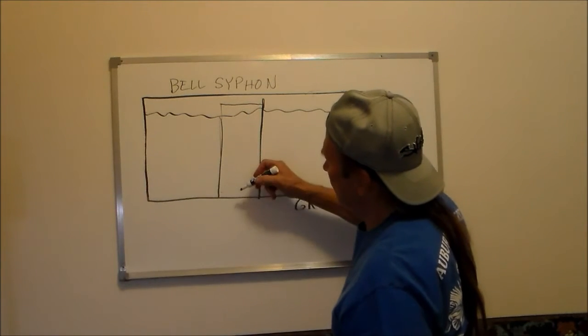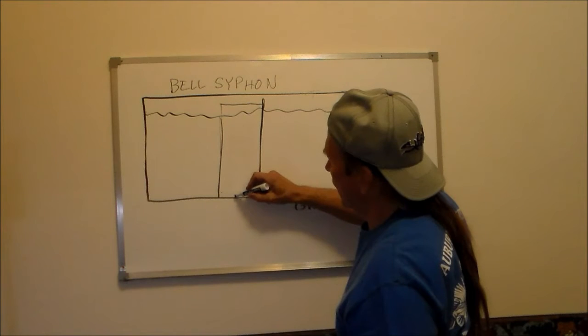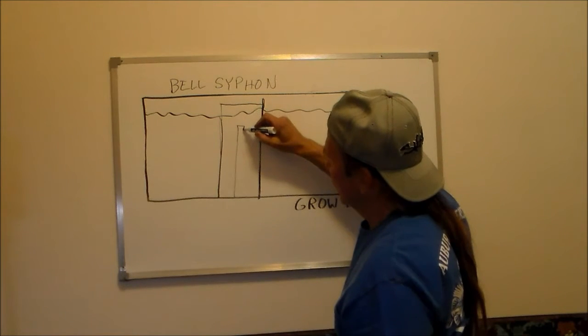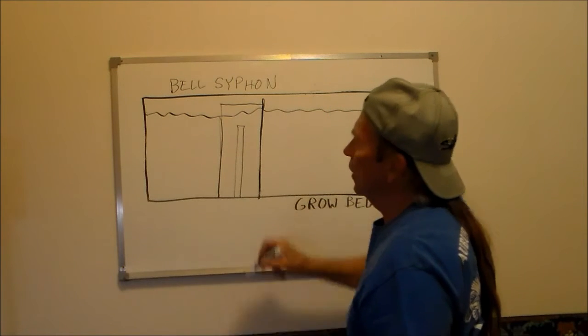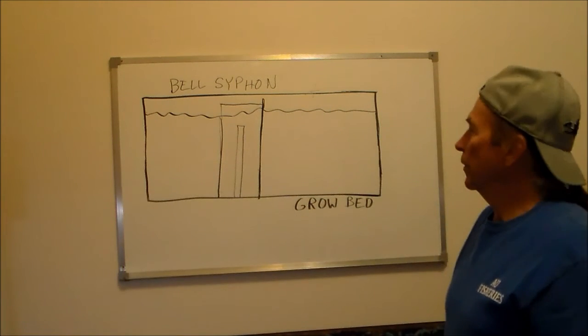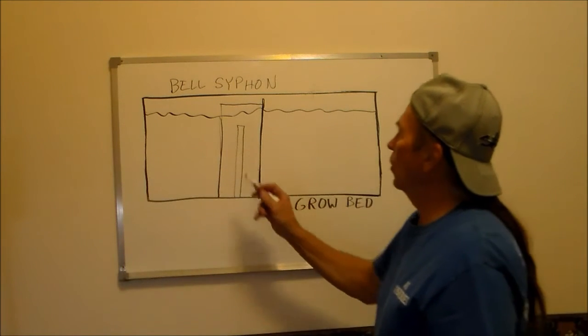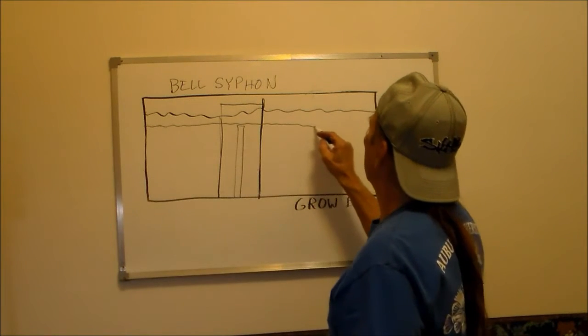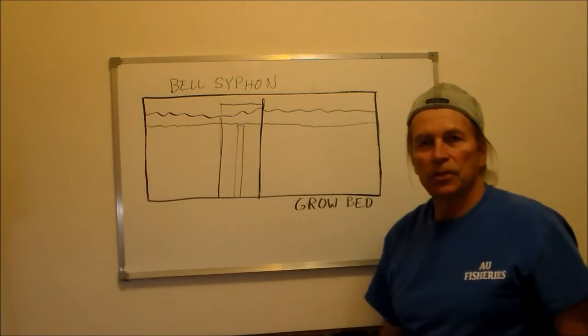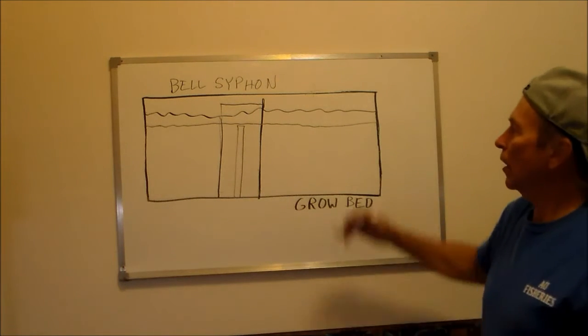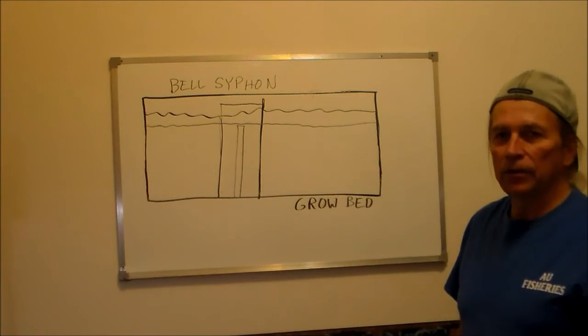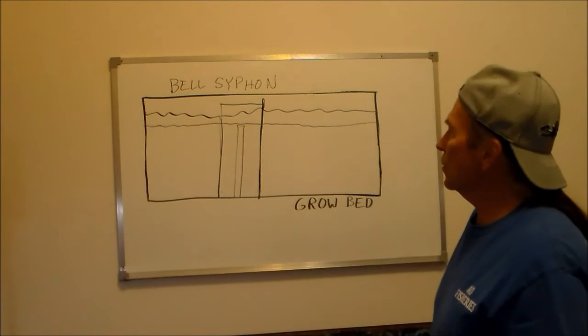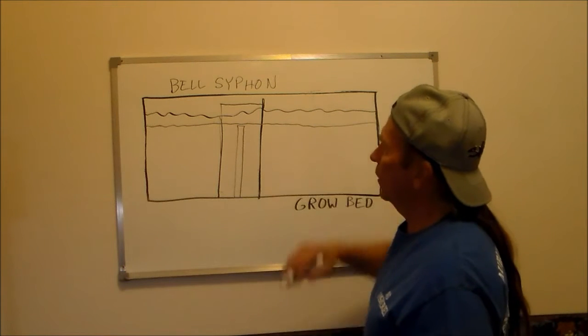You need to put a stand pipe in here. This is going to be the drain. This will also set up the height of the water when the grow bed is full. So right here I have it set so that the water height will be about one to two inches down below the top edge of the gravel. And you need to have that top dry so that algae doesn't grow up there.